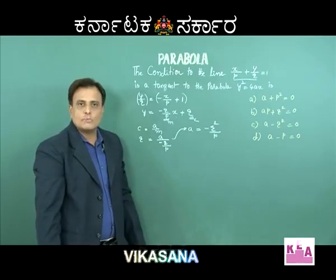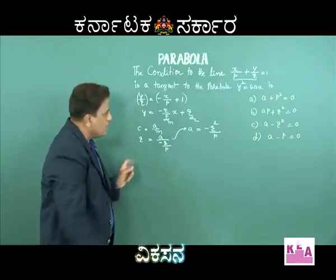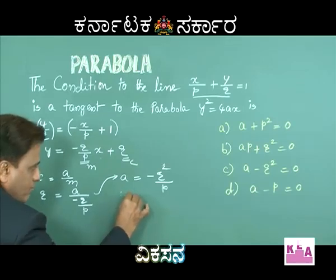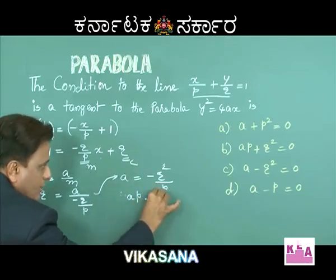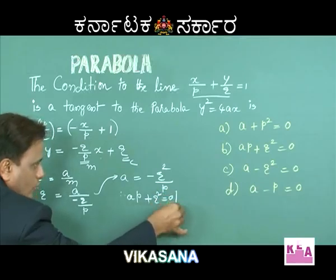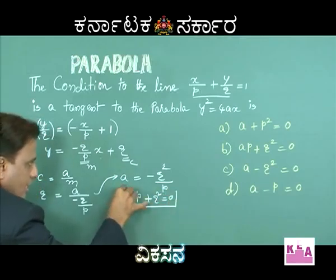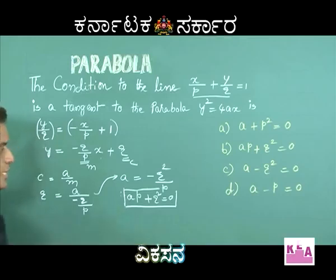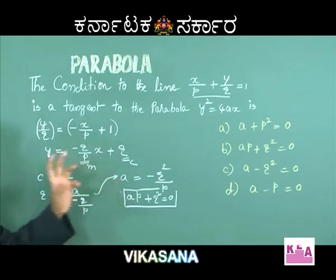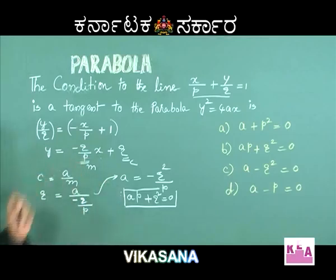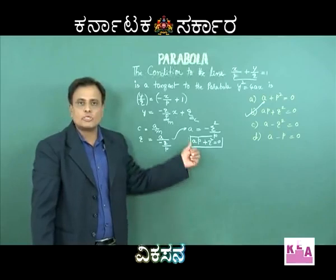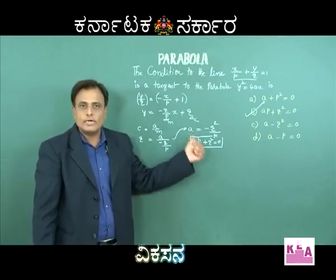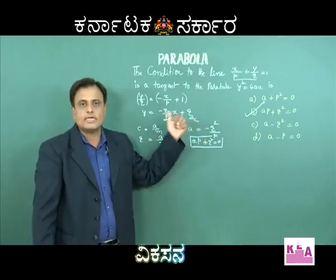After cross multiplication, a = -q²/p. Therefore, after simplification, ap + q² = 0. So the required answer is ap + q² = 0, which is option B.